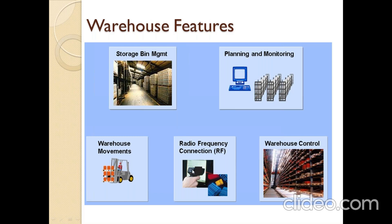The fourth feature is radio frequency (RF). RF connection is a one-time activity in the warehouse system. Without RF, a picker on the desktop has to prepare a transfer order, take a printed paper, walk through the warehouse to find bins, put items in a trolley, and pack — a fully manual process. The efficiency of the picker may not be good in this approach.